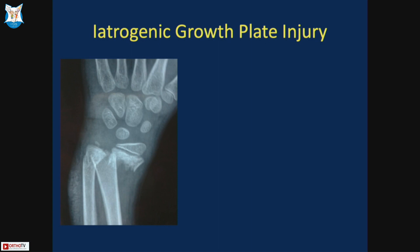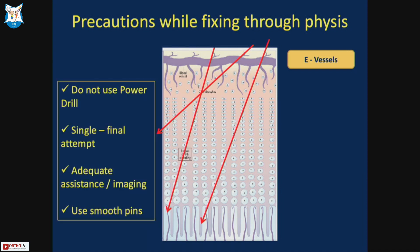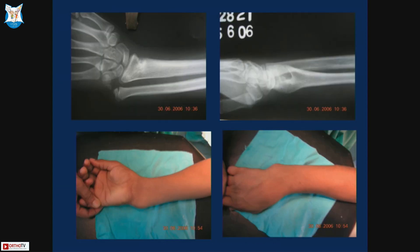Two additional injury types: iatrogenic growth plate injury is seen with distal radius K-wiring through the physis, sometimes causing deformities. Multiple attempts increase the risk of injuring epiphyseal vessels. Precautions include: do not use a power drill, single attempt should be the final attempt — requiring good assistance, image intensifier technician, and good fracture reduction. Use smooth pins, not threaded pins. Research shows wire diameter less than 2mm may not produce growth plate injury.